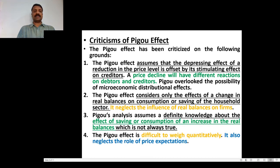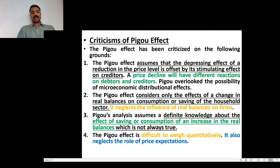For criticism: the Pigou effect assumes that a depressing effect — a reduction in the price level — is offset by its stimulating effect on creditors. A price decline will have a different reaction on debtors and creditors. Pigou overlooked the possibility of microeconomic distributional effects. It considers only the effects of a change in real balances on consumption or saving of households and neglects the influence of real balances on firms. The Pigou effect is also difficult to weigh quantitatively and neglects the role of price expectations.